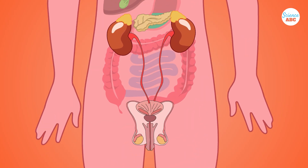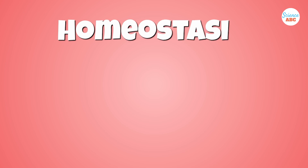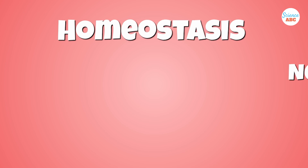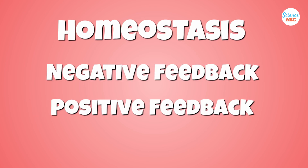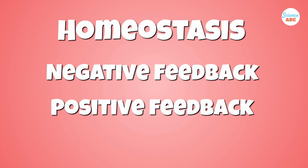The kidneys, filtering blood to remove excess water and electrolytes, are also important homeostatic regulators. The body uses two mechanisms to maintain homeostasis: negative feedback and positive feedback.